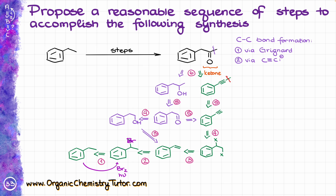Next, we are going to do an elimination reaction to make our alkene. Since there is only one choice of alkene we can make here, the choice of base is irrelevant, but I'm going to use potassium tert-butoxide — just because I like it.